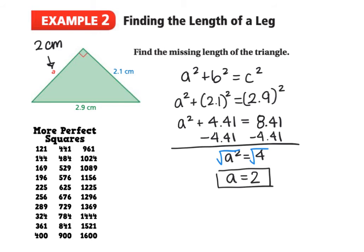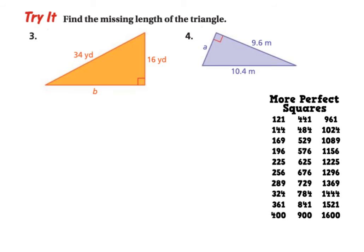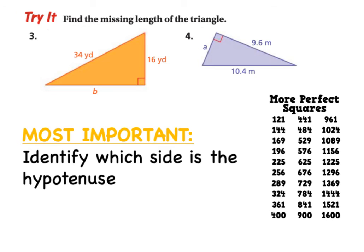Something to note when doing these problems: the hypotenuse — the side directly across from the right angle — always has to be the longest side. So for example, if we found A to be 4 centimeters, we'd know something went wrong. Here are two more try questions — find the length of the missing side of the triangle, B and A. Remember, the most important thing is to correctly identify the hypotenuse first.